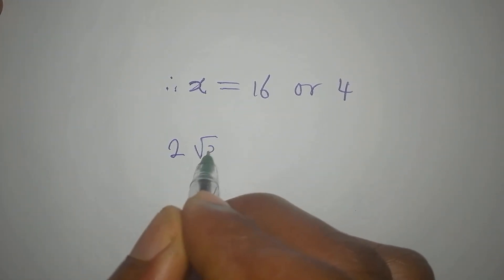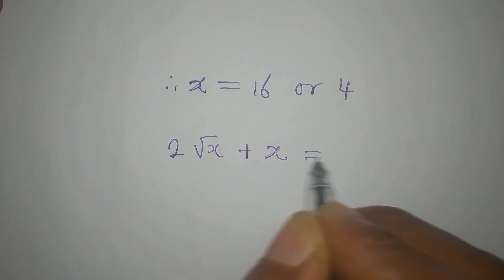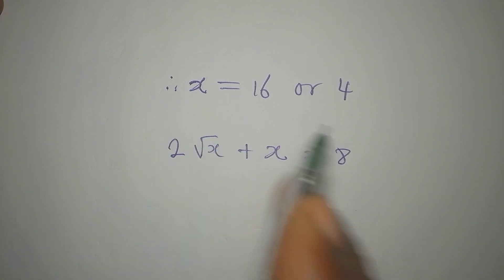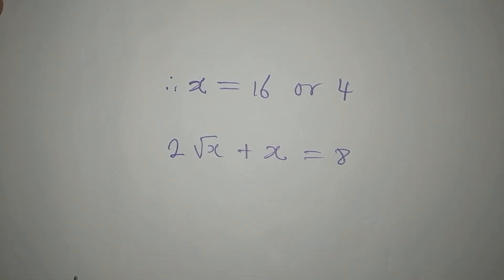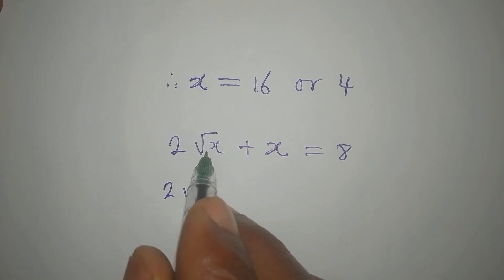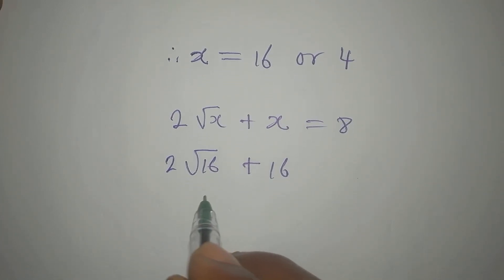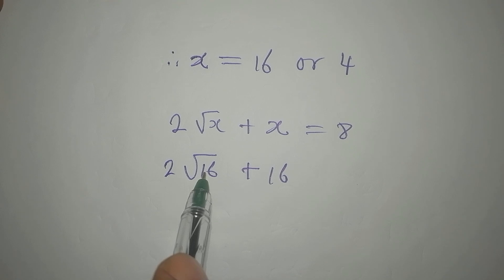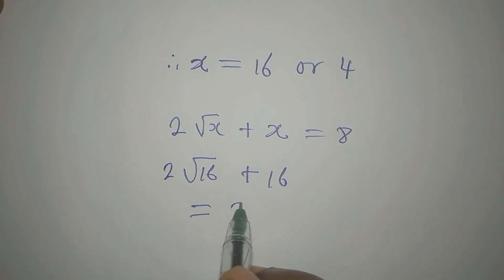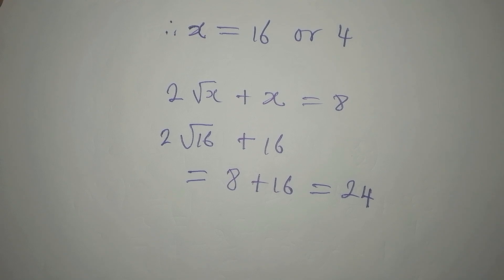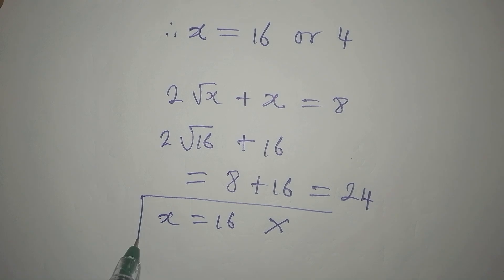Let's verify x = 16. Substituting into 2√x + x = 8: 2√16 + 16 = 2(4) + 16 = 8 + 16 = 24, which does not equal 8. So x = 16 does not satisfy the equation and must be rejected.